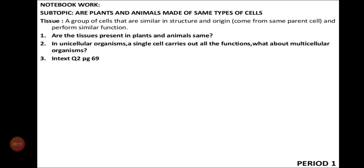What is tissue? A group of cells together will make a tissue. Many tissues will make an organ, an organ will make an organ system, and an organ system will make organisms.